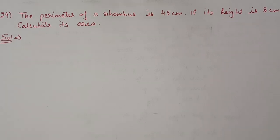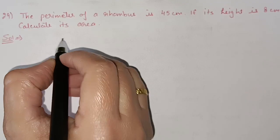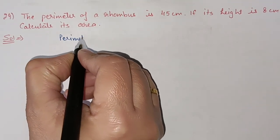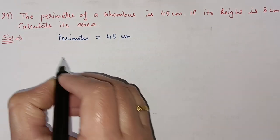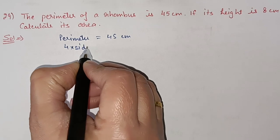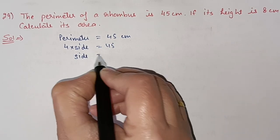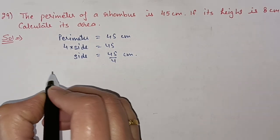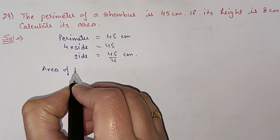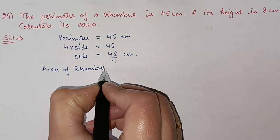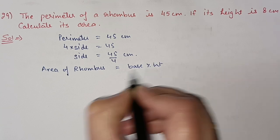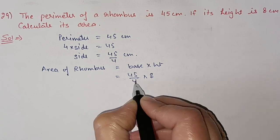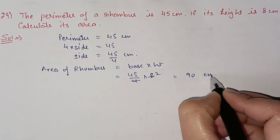Question number 29: the perimeter of a rhombus is 45 centimeter. If its height is 8 centimeter, calculate its area. Since all four sides of a rhombus are equal, perimeter equals 4 times side. So one side equals 45 by 4 centimeter. Area of rhombus equals base into height, so 45 by 4 into 8 equals 90 centimeter square.